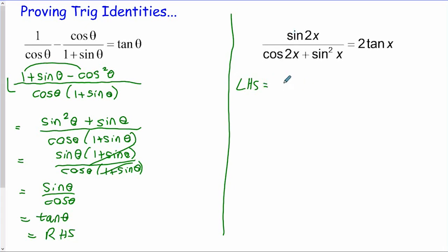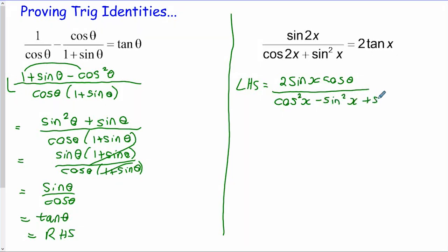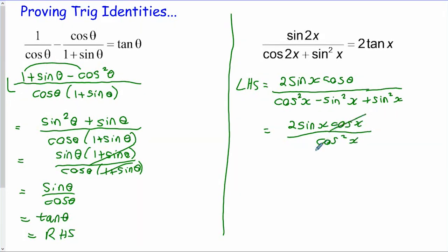I need to take a sin theta out on the top, and then I get sin theta times (1 plus sin theta) over cos theta times (1 plus sin theta). These can divide out and I get the required result. For this second identity, I'm going to work with the left hand side. Sin 2x is 2 sin x cos x. For cos 2x I choose cos squared x minus sin squared x, because on the bottom I've got cos squared x minus sin squared x plus sin squared x - the sin squared x cancels and I get 2 sin x cos x over cos squared x. I can cancel a cos x top and bottom to get 2 sin x over cos x, which is 2 tan x - equal to the right hand side.